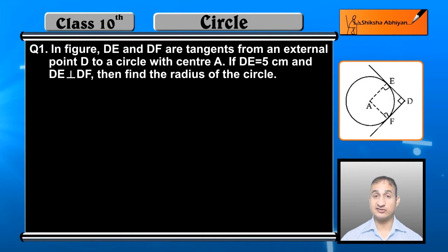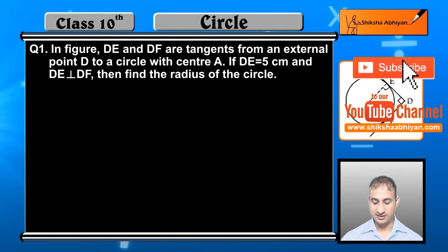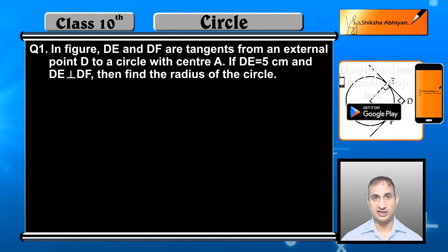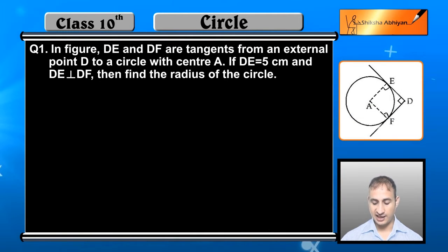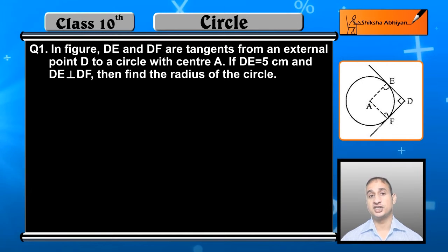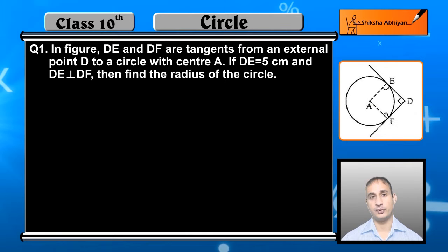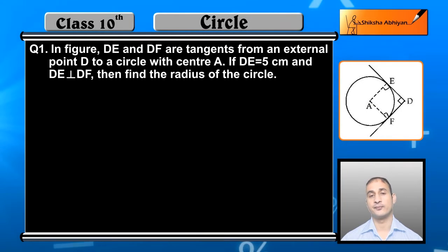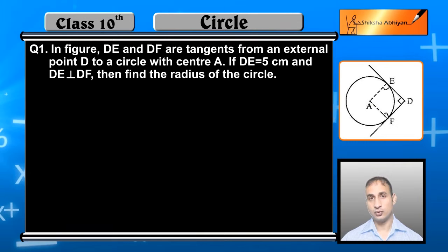Find the radius of the circle. Students, if you look at the figure, DE and DF are equal because tangents from the same point are equal, so both are 5 cm. Angle AED = 90° (angle between radius and tangent). Similarly, angle AFD = 90°. Three angles are 90°, so angle EAF will also be 90°. That means quadrilateral AEDF is a square.